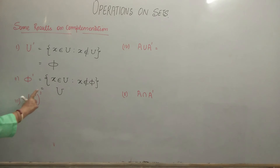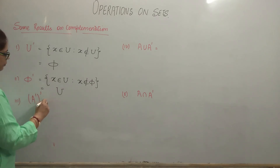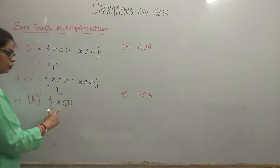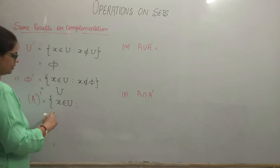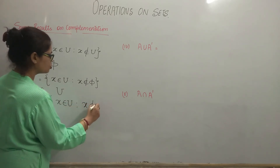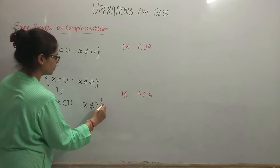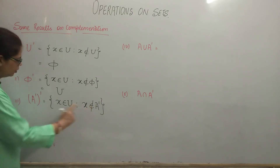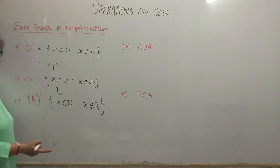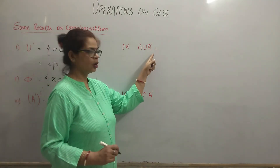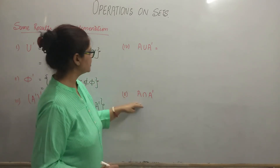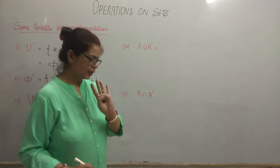Now, the complement of complement of a set. The complement of complement of A means: the set of all elements x in U such that x does not belong to the complement of A. If x does not belong to A complement, then x belongs to set A itself. So the complement of complement of A is equal to A.